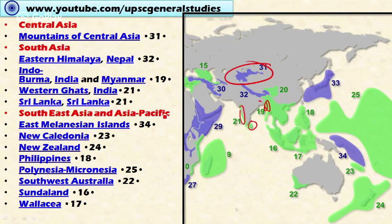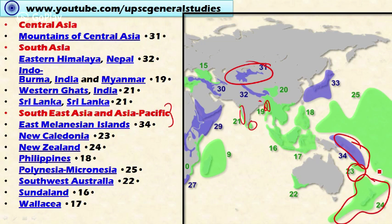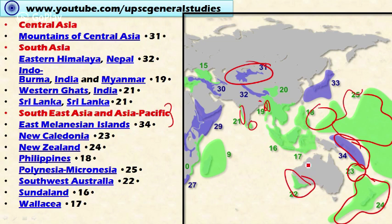In Southeast Asia and the Asia Pacific, we have the East Melanesian Islands, New Caledonia, New Zealand and surrounding islands, Polynesia-Micronesia, the Philippines, Southwest Australia — only that part is considered a biodiversity hotspot — and Sundaland. Sundaland is the region comprising the Indomalayan Peninsula, Singapore, Taiwan, and Brunei.